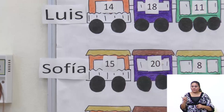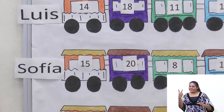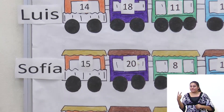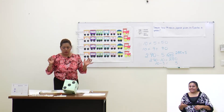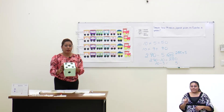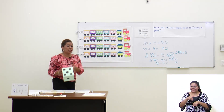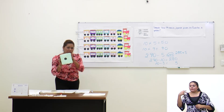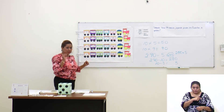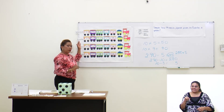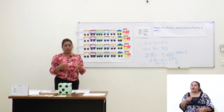Continuamos con Sofía. Sofía lanza el dado y obtiene el número 2. Al 15 le quita 2, ¿cuánto es? 13. Muy bien. Continuamos con Pedro. Pedro lanza el dado y obtiene el número 5. Si tiene 12 y le quita 5, ¿cuánto es? 7. A uno de ellos se le dificulta un poquito, pero no importa, porque vamos aprendiendo a calcular mentalmente.